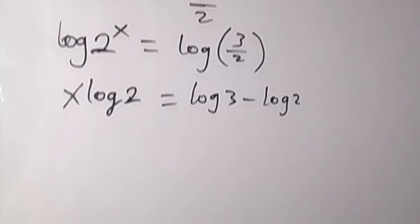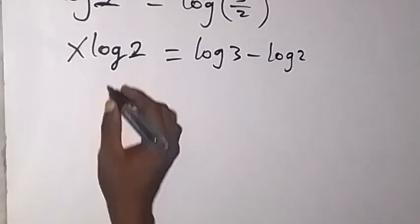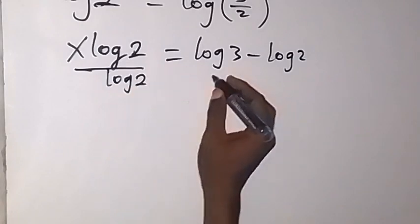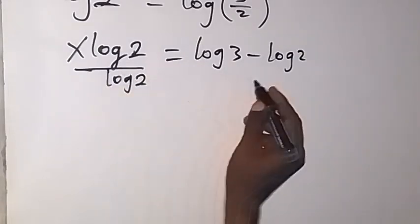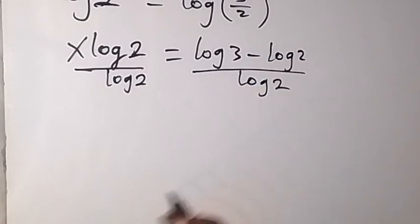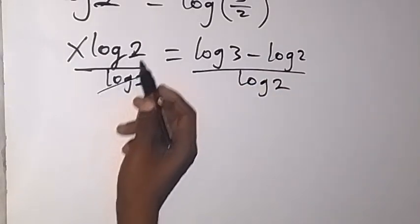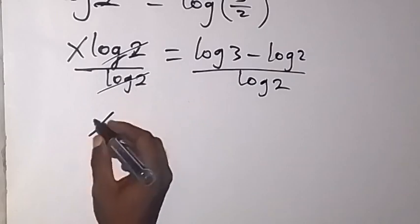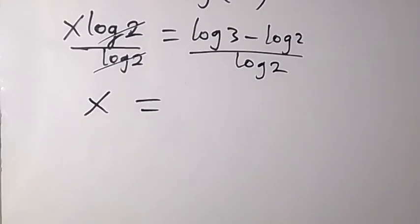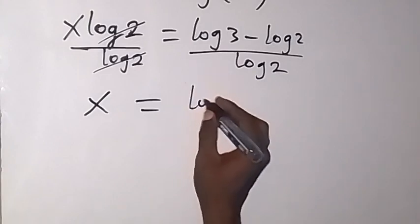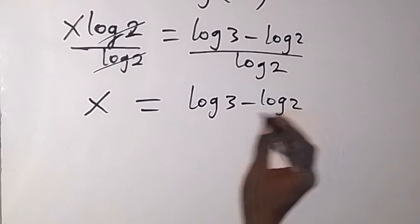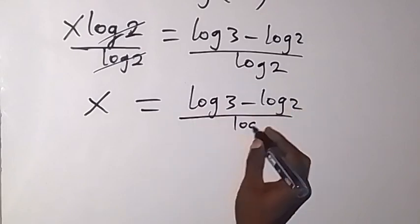And from here, we are finding the value of x. Let's divide both sides by log 2. So we have divided by log 2 on this side, then divide by log 2 on this side. Then log 2, we cancel log 2. We are left with x on this side, which is equal to log 3 minus log 2, then over log 2.